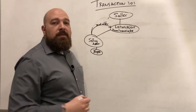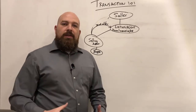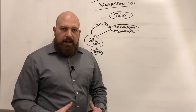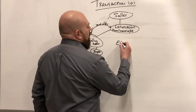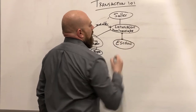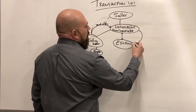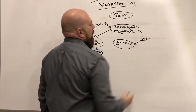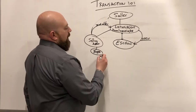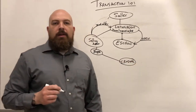The listing agent reviews the offer with their seller. Let's say the offer has been accepted — now they open what's called escrow. For those new to the business, escrow is the company that holds everything together and through which the property is sold, whether it's a commercial deal, vacant land, residential, or residential income. Escrow is now at the center of the entire transaction. The listing agent opens escrow, and the transaction has officially started. As a buyer you now need your lender.